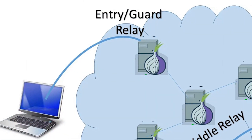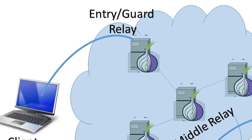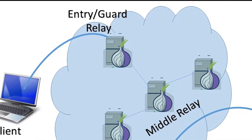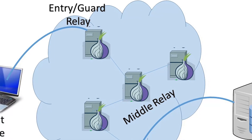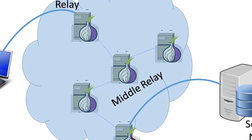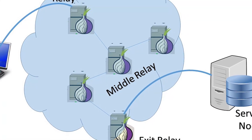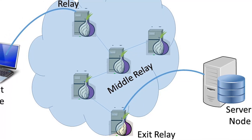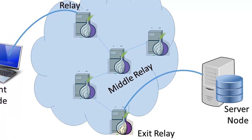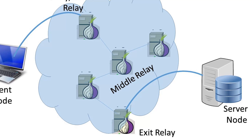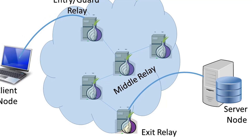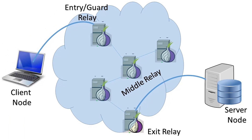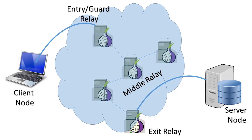There are at least three stages in which your data travels through when using Tor: the entry node, which inevitably knows your IP address; the middle node, which prevents the exit node from finding out which entry node you used and makes it very hard to correlate this information; and the exit node, which knows what site you are connecting to but does not know who you are.